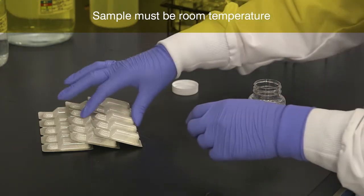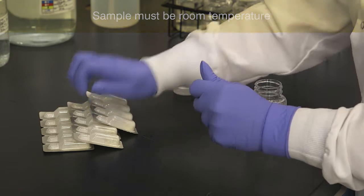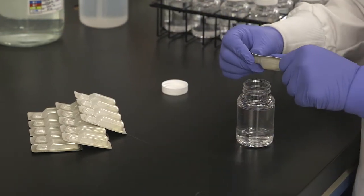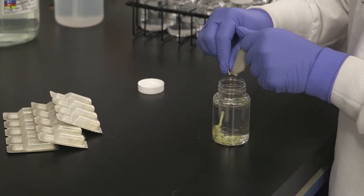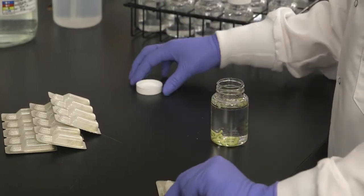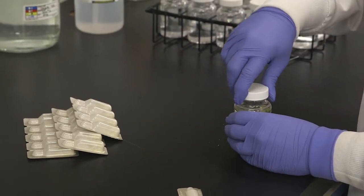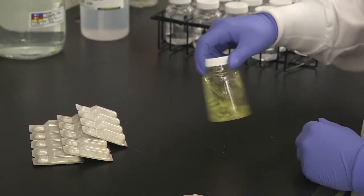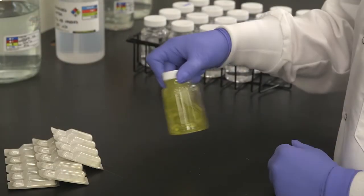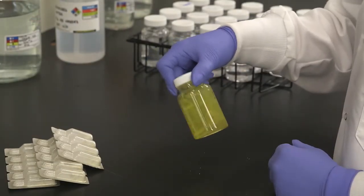Allow the sample to come to room temperature. Separate one ColiShore pack from its strip, taking care not to accidentally open the other packs. Snap open the reagent pack and pour the powder into a 100 ml water sample. Cap the vessel and shake to dissolve the ColiShore powder. The sample will turn yellow as the reagent dissolves.